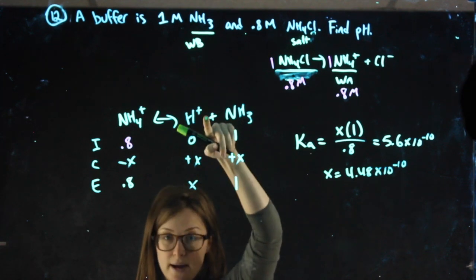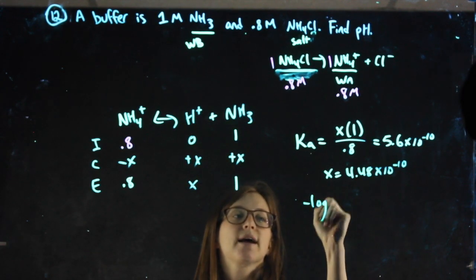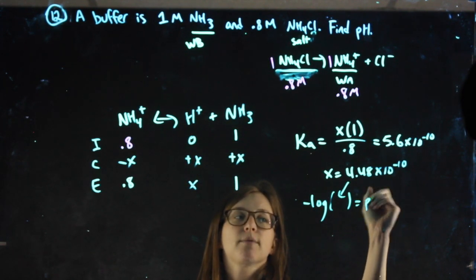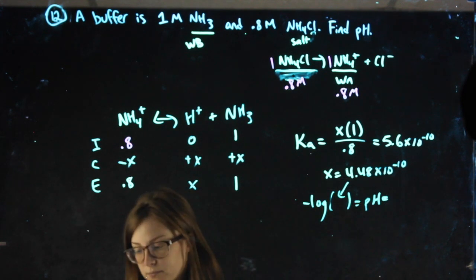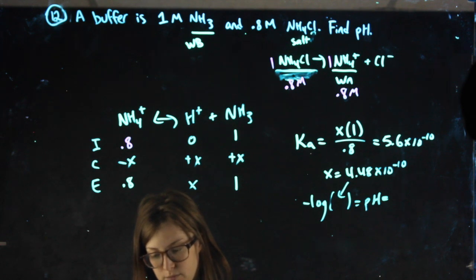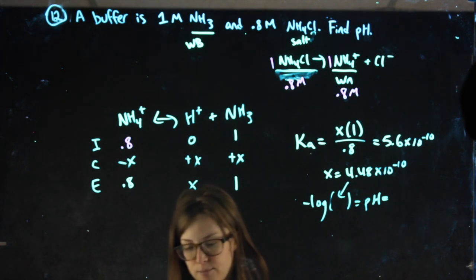X represents my H+. So negative logging my H+ will get me my pH. 9.35.